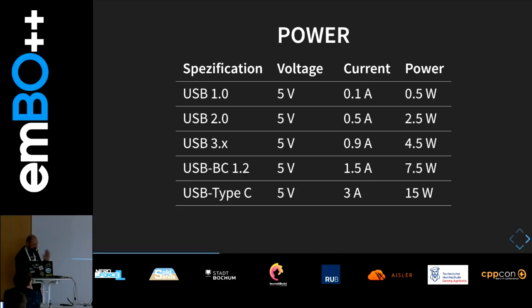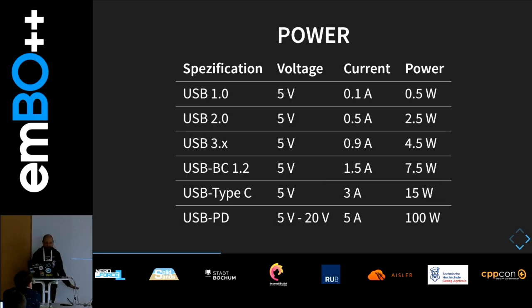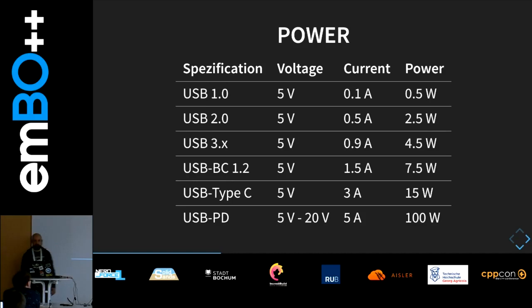USB Type-C has its own specification — they can use three ampere at five volts, so 15 watts. And now it gets a bit strange: we have USB Power Delivery, its own specification that can extend the others. In Type-C, we can now get 20 volts, and with five ampere we get 100 watts, if we want.